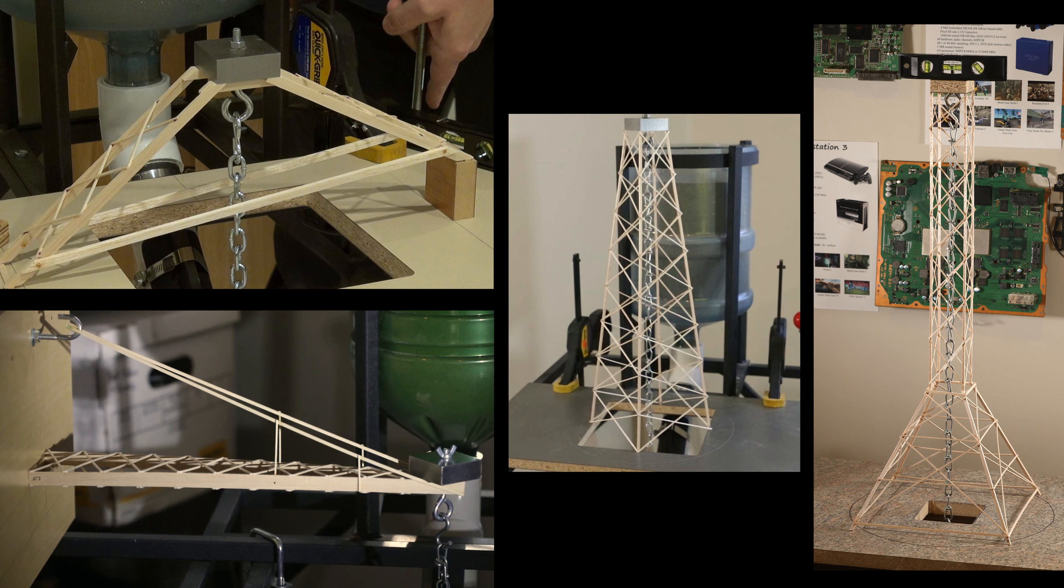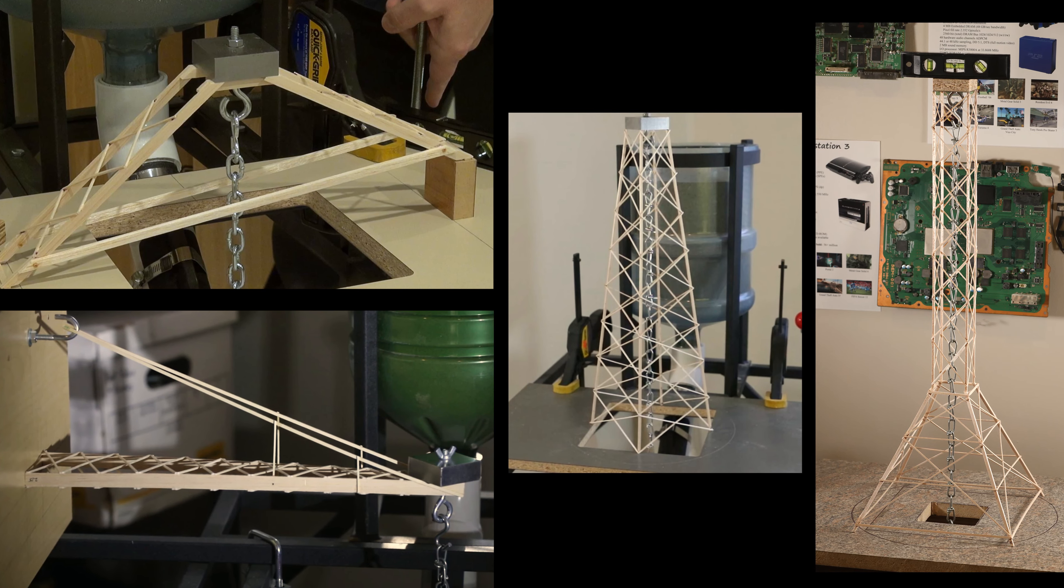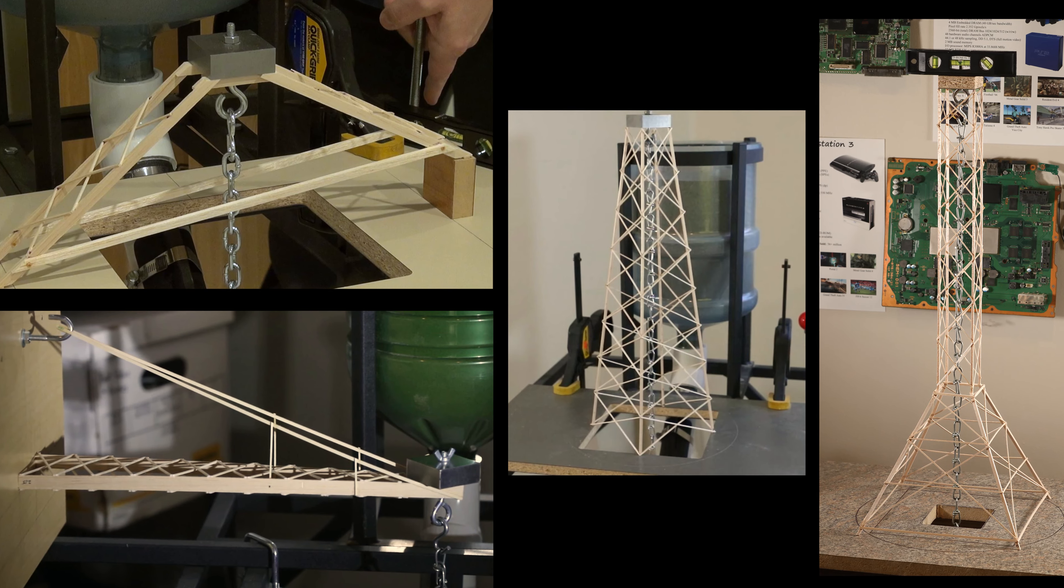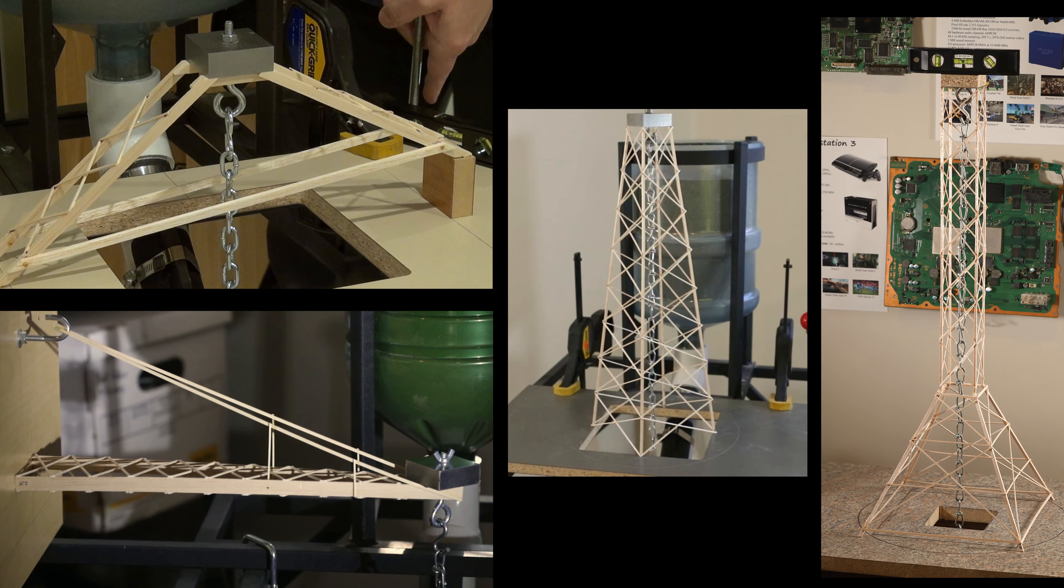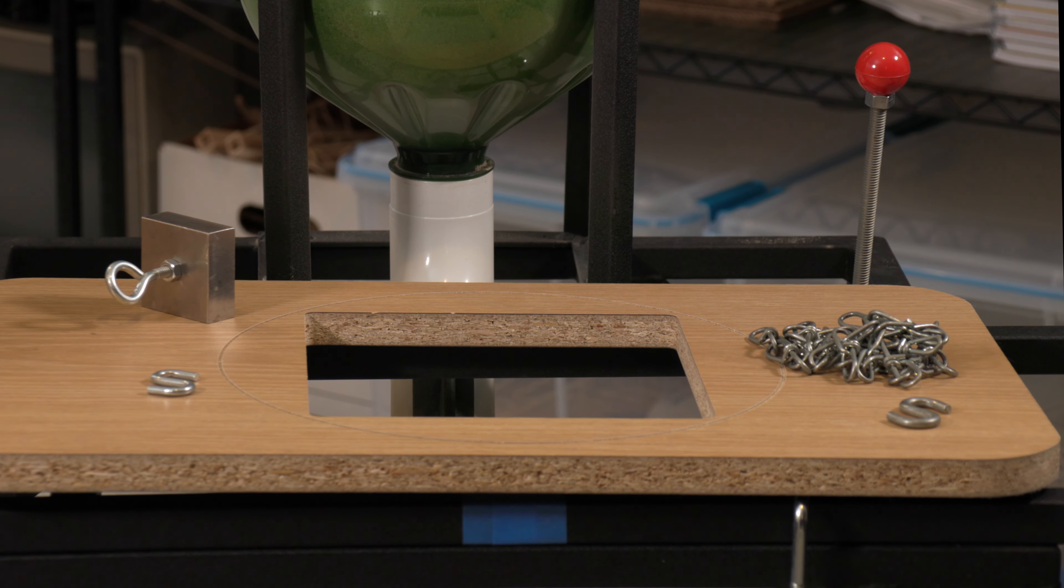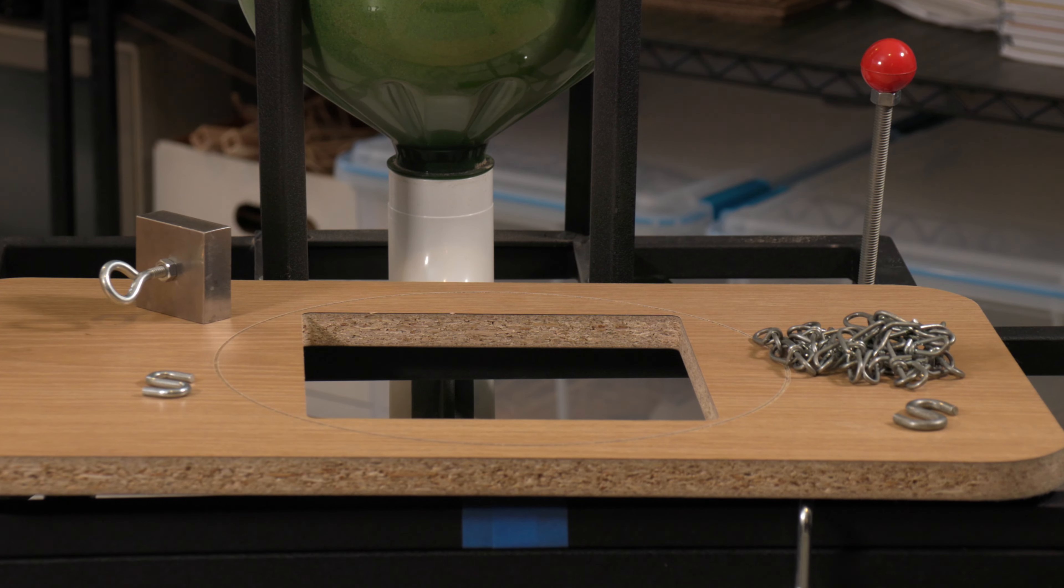For example, Division C bridge might have to span 45 centimeters instead of 35, or the Division C tower might have to be 60 centimeters tall instead of 50. Most of the event rules are bound by the testing apparatus and process and don't change from year to year.